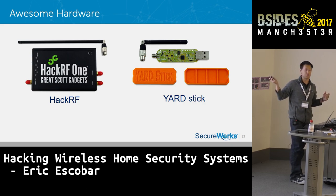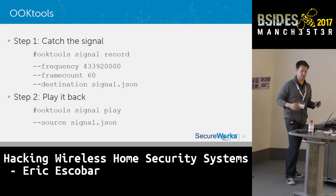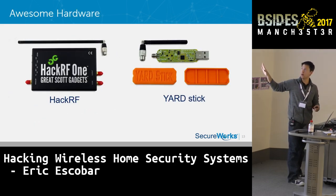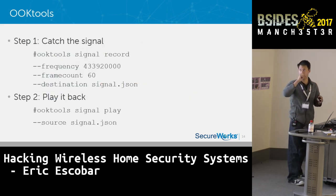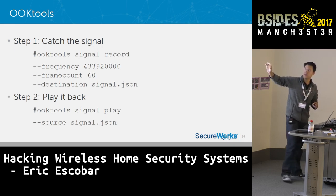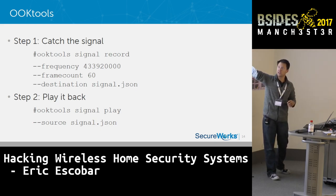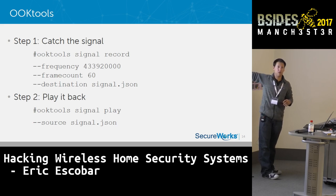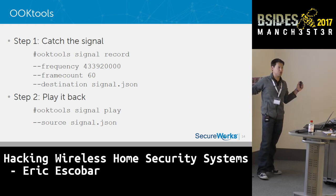The Yardstick One is cheaper at around $145, with a narrower range of frequencies, but if you're looking to get your feet wet it's an extremely cheap entry point. Using OOK Tools with the Yardstick One paired to a laptop or Raspberry Pi, all you do is run the signal record command with the frequency in megahertz, frame count for duration, and destination file. You record the signal — like programming a universal TV remote — and then play it back as many times as you want. That's all that's required for one of these attacks.